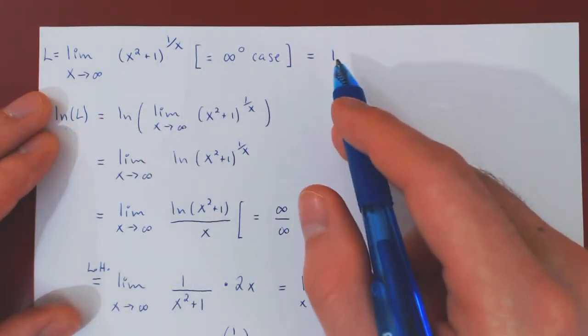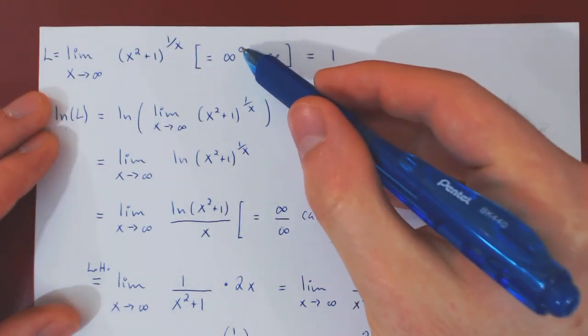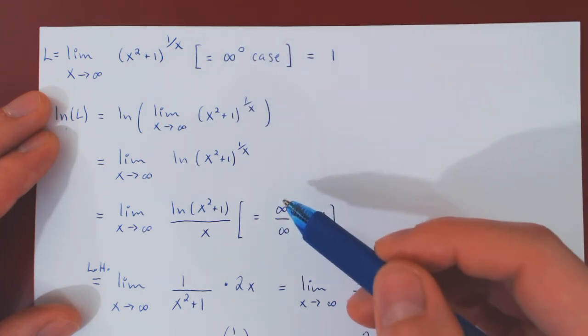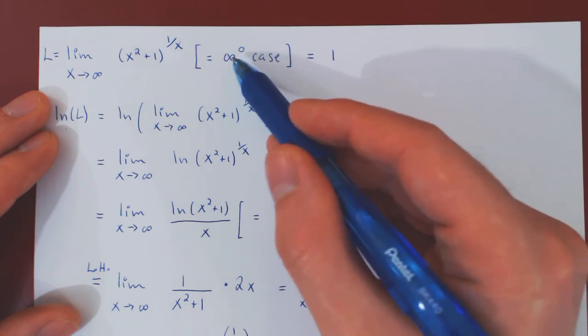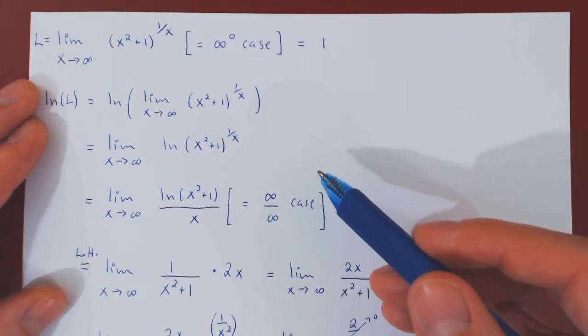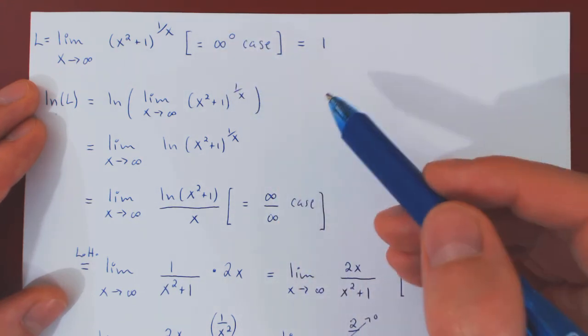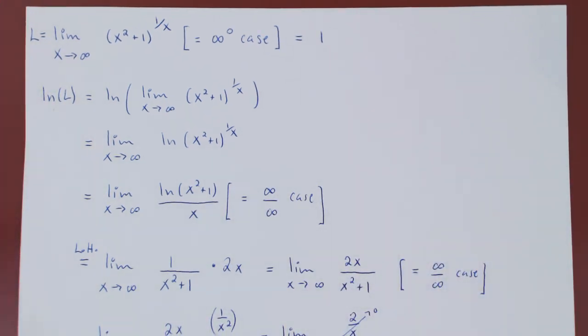And so you see in this case, because the limit is 1, well, the exponent took over and made the whole expression shrink back down to 1. Now in some other cases, the base may take over and push the whole thing off to infinity, and in yet other cases, they can also balance each other out to, in theory, any real number. And that's it.